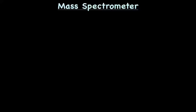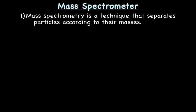Here we go — mass spectrometer. Mass spectrometry is a technique that separates particles according to their masses — that's important. A whole group of particles end up being separated according to how much they weigh, their masses.